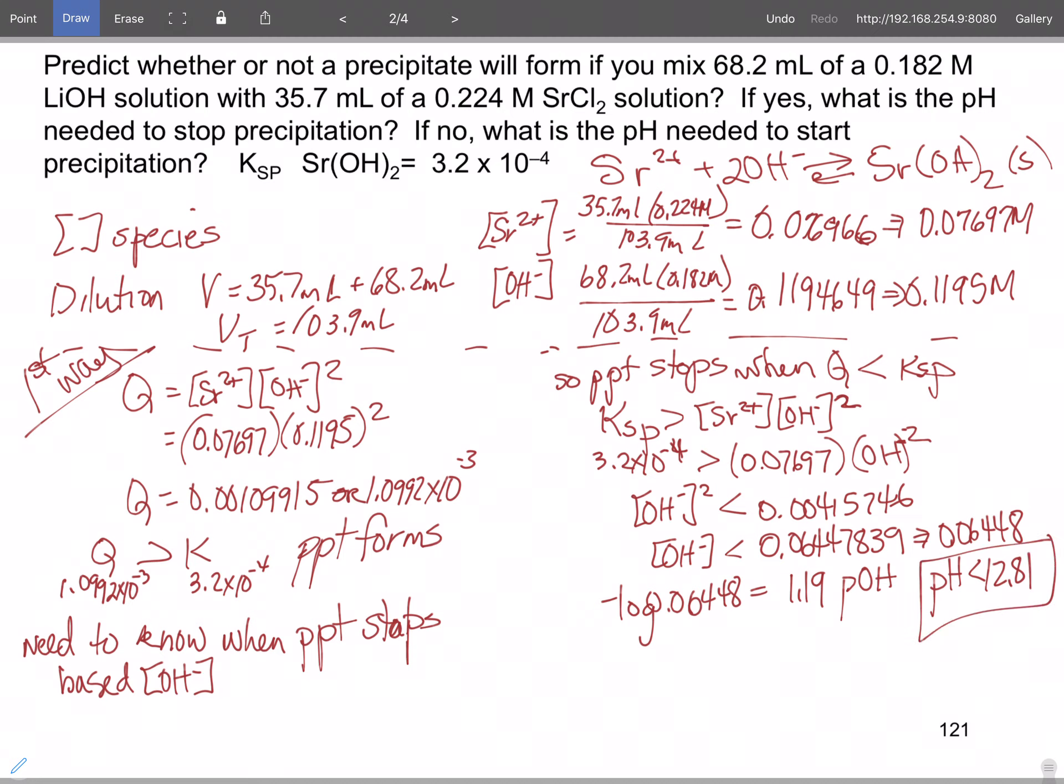So basically this is the pH at which it starts. So we need it to be less than the 12.81 pH to stop it. That's the first way you can work this problem.